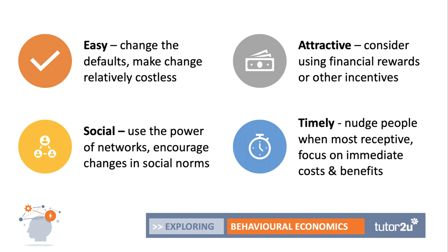The Easy element often involves changing defaults and helping to overcome status quo bias. Easy can mean making change relatively quick and costless — sometimes simple things like the design of a form, if better designed, can change people's choices. Attractive can involve the use of financial rewards; nudges typically don't rely on financial rewards, but sometimes small rewards can make a difference.